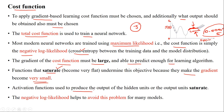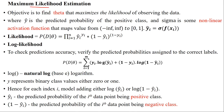Activation functions used to produce output of hidden units or output units may also become saturated. We use the negative log likelihood to avoid these kinds of issues in many neural network models. Maximum likelihood is estimated using the objective function to find the theta (parameter) values that maximize the likelihood for the given training dataset.